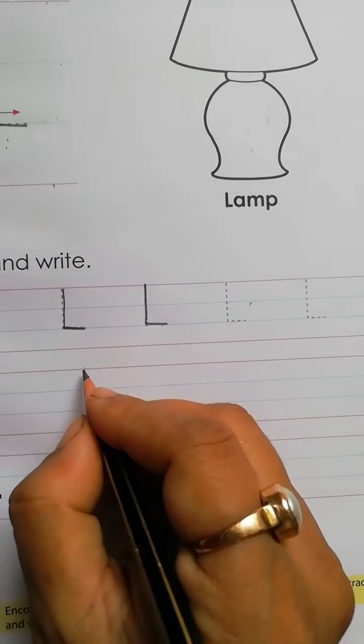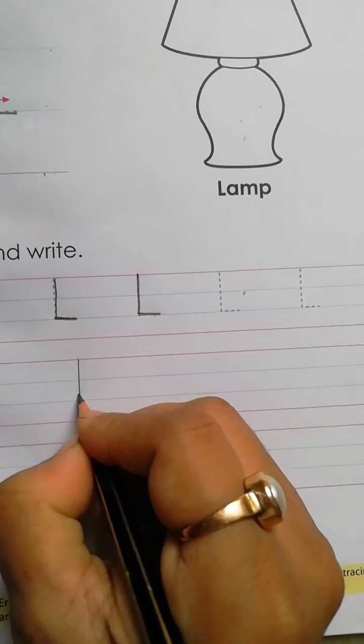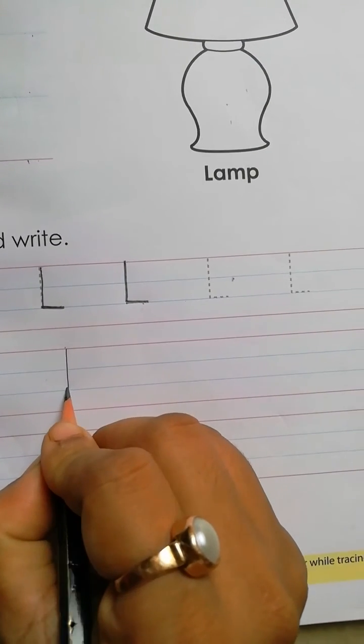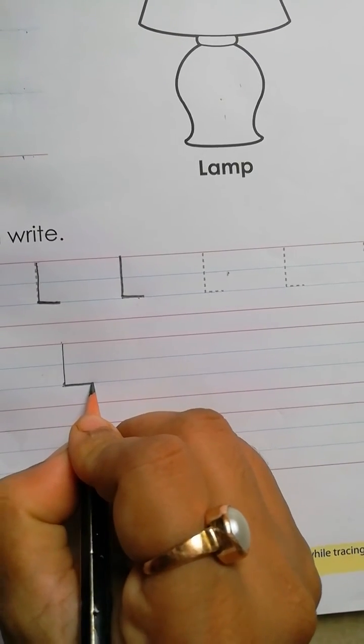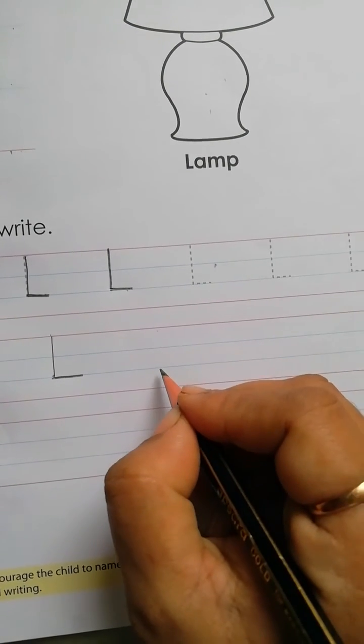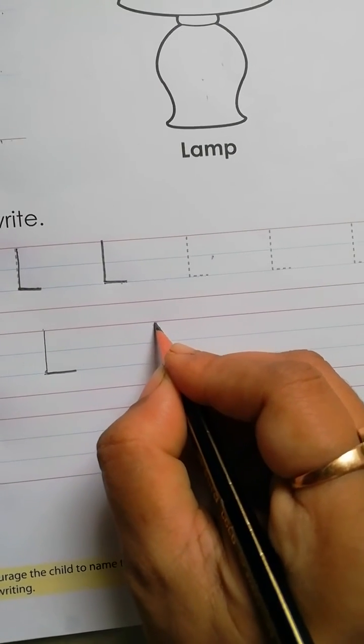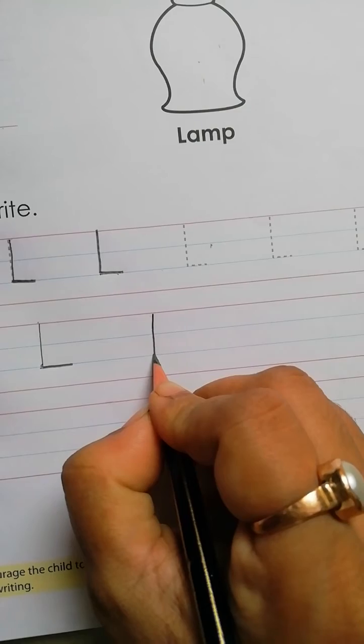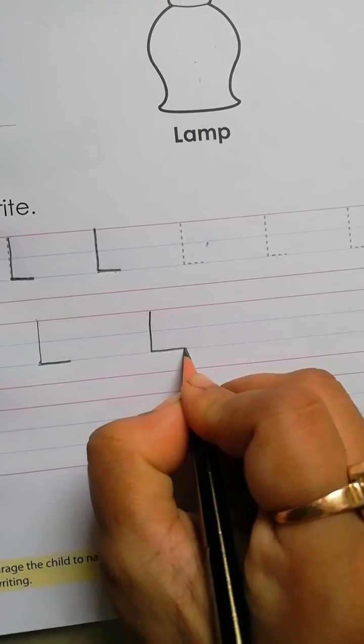Red line, to second blue line, standing line, then slipping line. Red line, to second blue line, standing line, then slipping line.